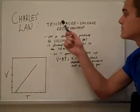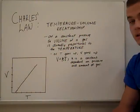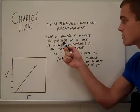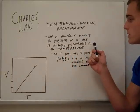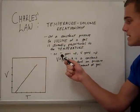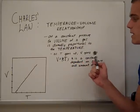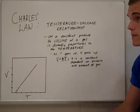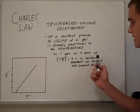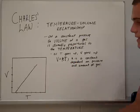Charles Law. The next law. Temperature and volume relationship. It states that at a constant temperature, the volume of a gas is directly proportional to the temperature. This means as T goes up, V goes down. It's expressed by this equation: V equals KT. K is a constant dependent on pressure and the amount of gas.